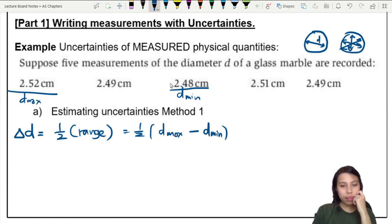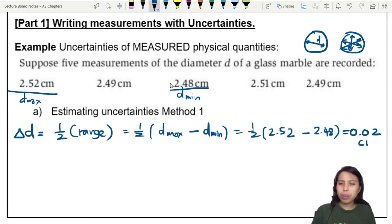Minus it, you'll get 2.52 minus 2.48. And these are all in cm. And that would give us, after calculation, a value of 0.02. This is cm? cm. Okay.